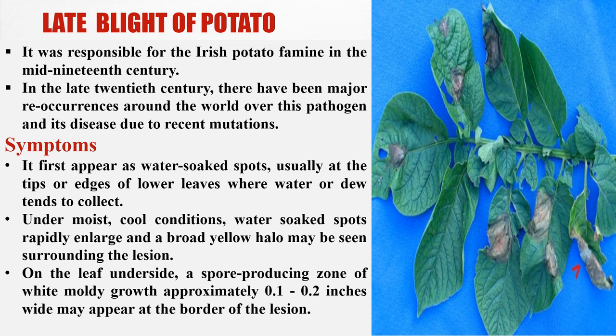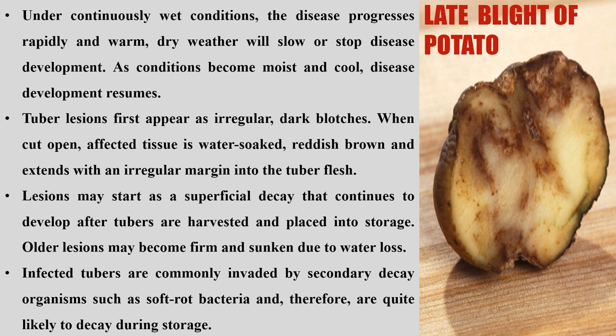Under continuous wet conditions, the disease progresses rapidly. Warm, dry weather will slow or stop disease development, but as conditions become moist and cool, disease development resumes. Tuber lesions first appear as irregular dark blotches; when cut open, affected tissue is water-soaked, reddish-brown, and extends with an irregular margin into the tuber flesh.